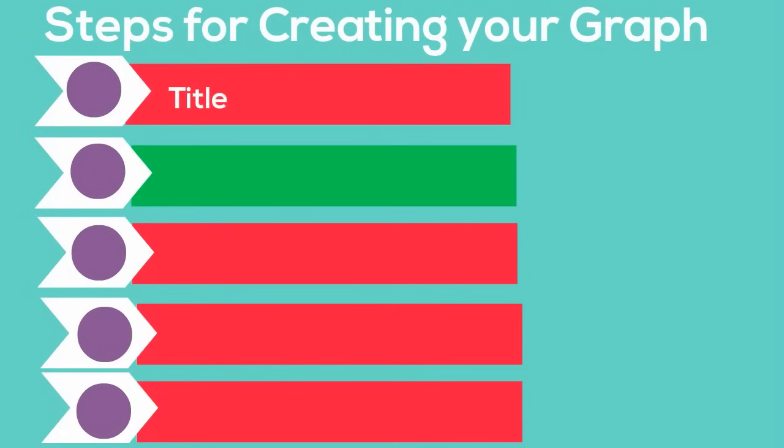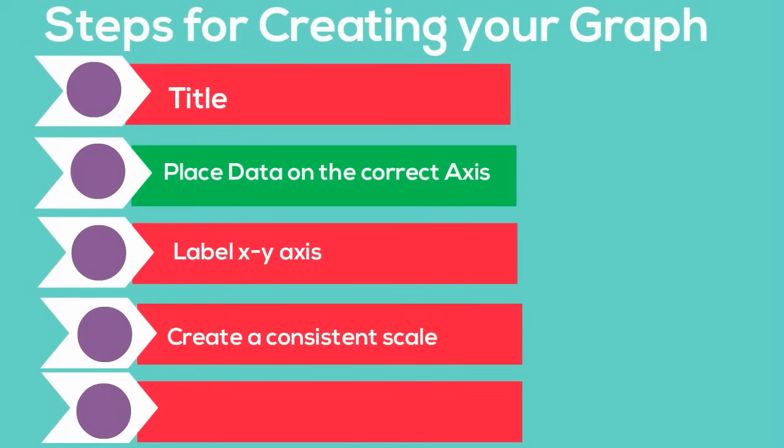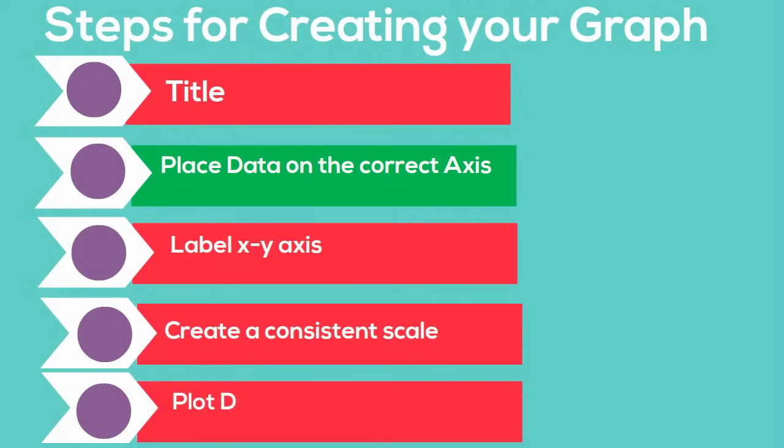First title your graph. Next you need to place your data on the correct axis. Next you will label your x and y axis and then create consistent scale. And then finally you will plot your data onto the graph.